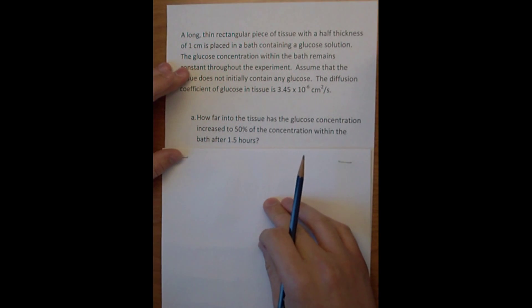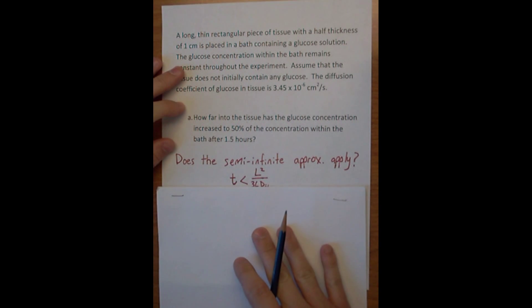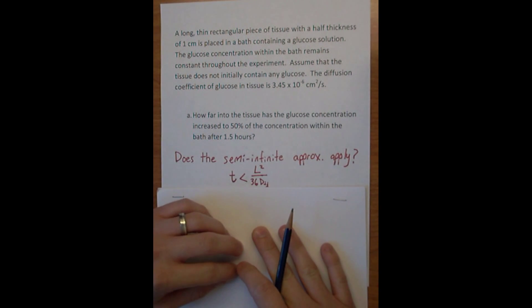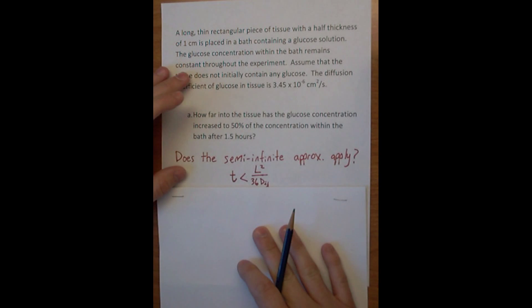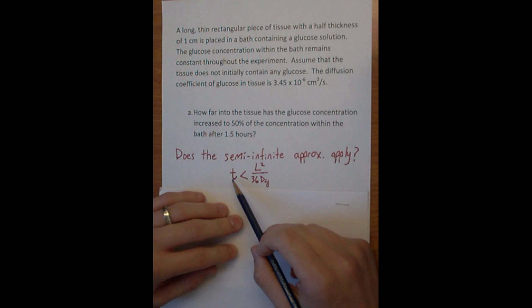To do that, the first thing I want to think about is does the semi-infinite approximation apply? To answer that question, we use this equation here. The question is: is the time less than L squared divided by 36 D_ij?